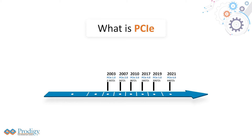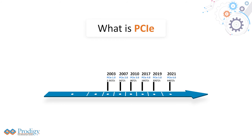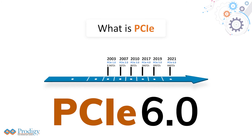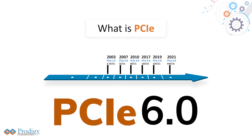In 2021, the PCIE 6.0 specification will be introduced, enabling 64 giga transfers per second, or 64 gigabits per second per link. One unique feature of the PCIE standard is the ability to increase the number of lanes from 1 to up to 32 lanes to increase its throughput. A PCIE 6.0 link that is 16 lanes wide would have a data rate of 128 gigabytes per second, which is extremely fast by today's standards.